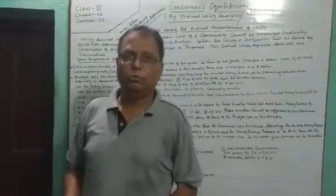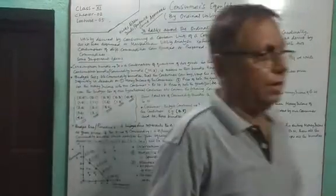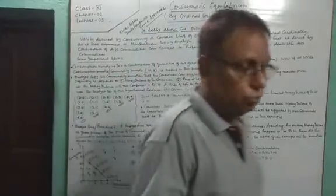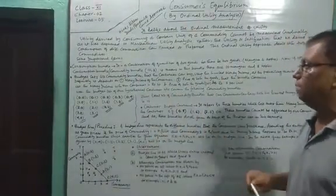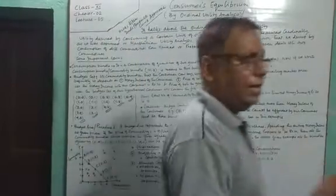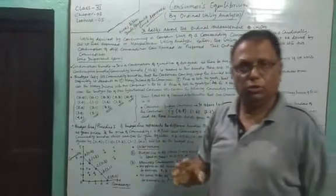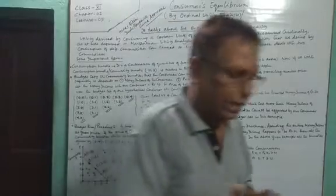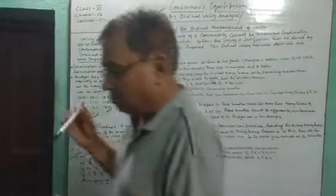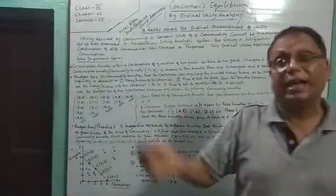Good morning dear students, welcome to our class of economics. We were studying consumer behavior, and I had explained the cardinal utility analysis, also known as the Marshallian utility analysis. Today we will see the second approach of consumer equilibrium, given by two economists, Hicks and Allen — the ordinal utility approach, also known as the Hicks-Allen indifference curve approach.